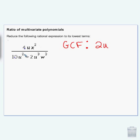Here I have x's, but I have no x's here and no x's here, so I can't remove any x's, and the same for the w's. So this is my greatest common factor, 2u.